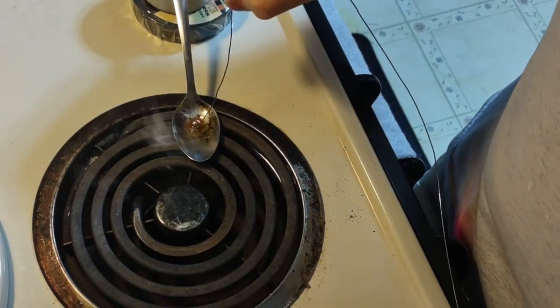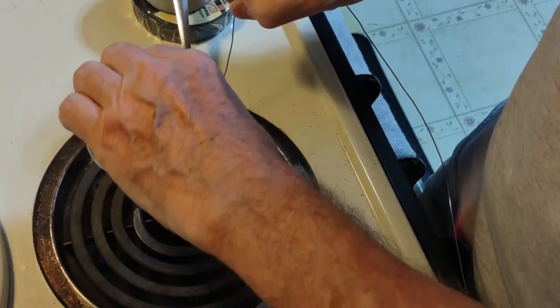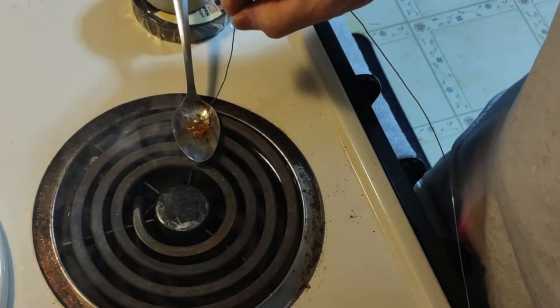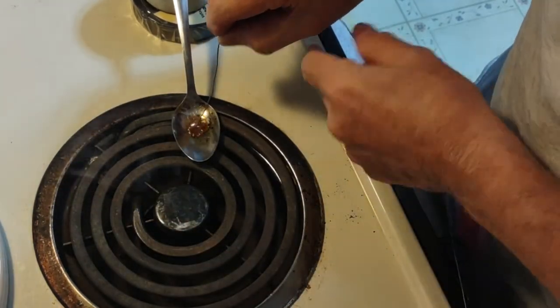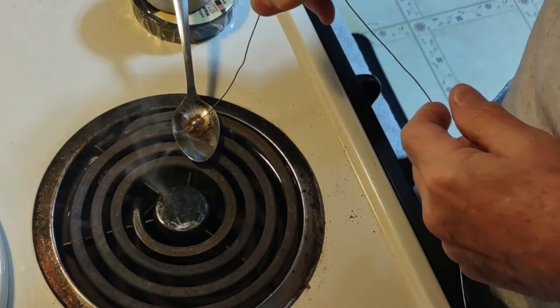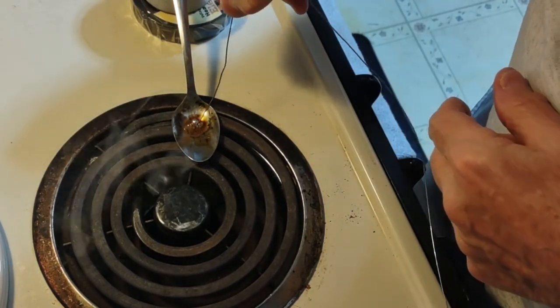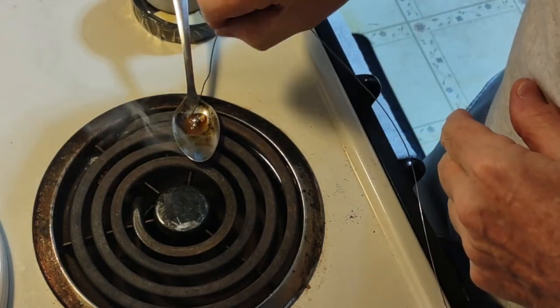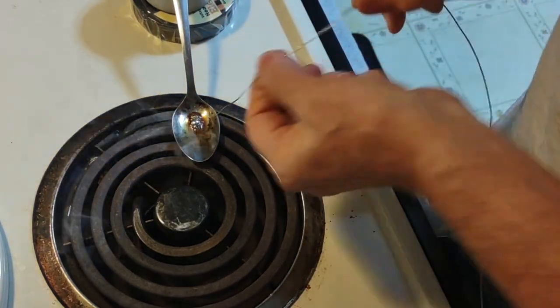We first put a spoon on there. This one is stainless steel. Melt a good bowl of solder into the spoon. It's hard on the fingers because it's hot.